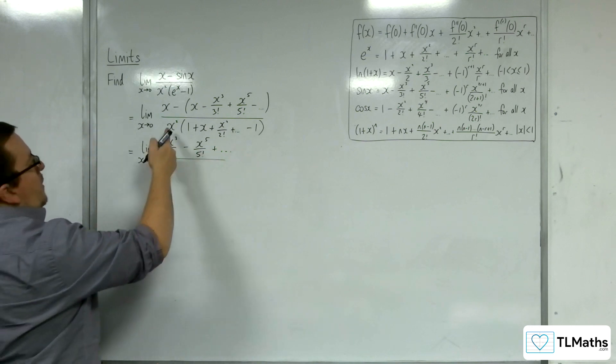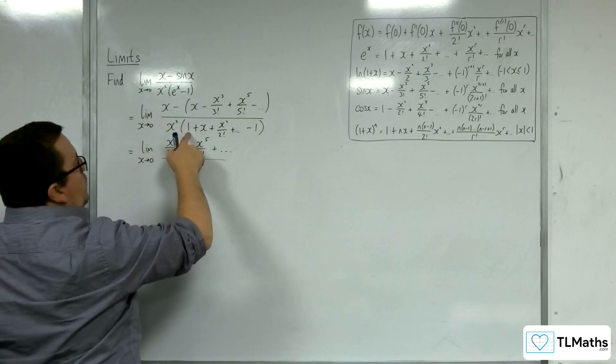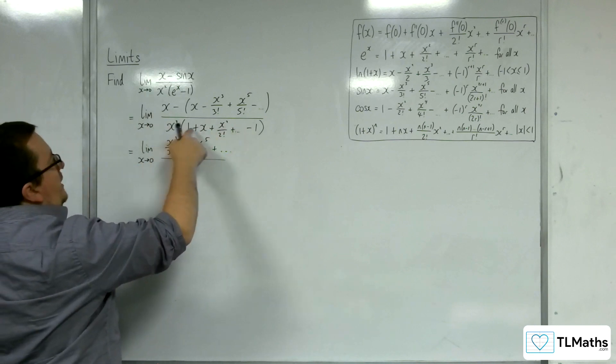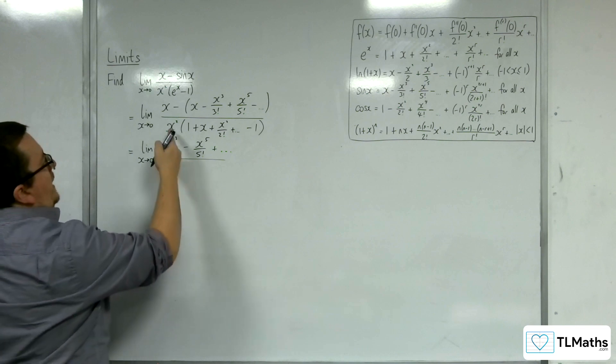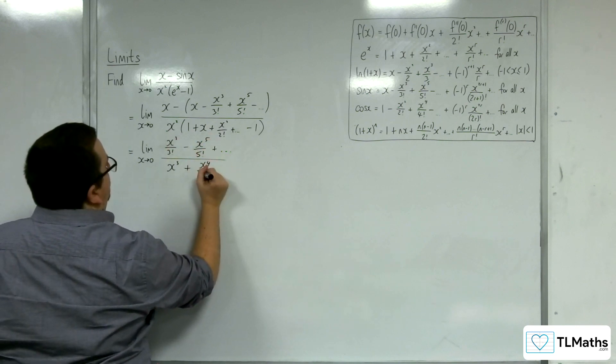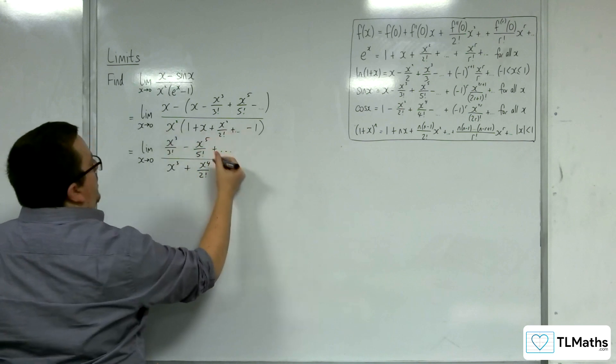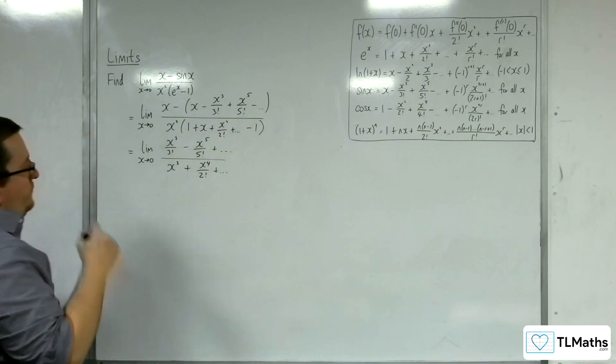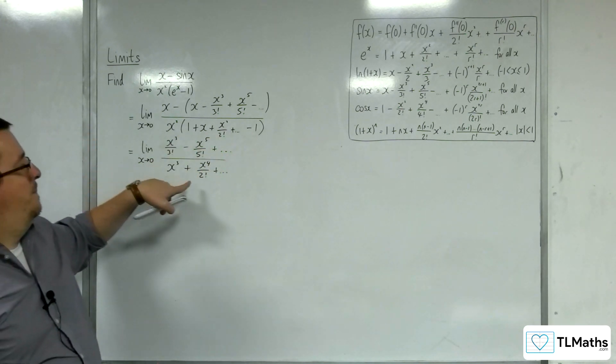In the denominator we've got the 1 take away 1, that's gone. X squared times x is x cubed. X squared times x squared over 2 factorial is x to the 4 over 2 factorial, and then x squared times all the other terms. So this is what I'm left with.